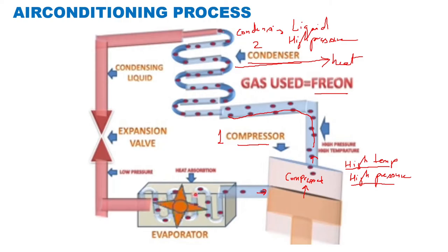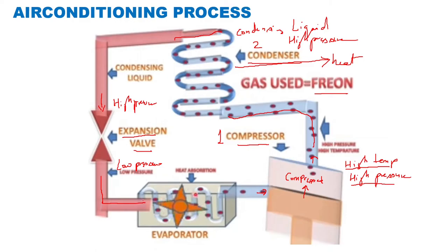The condensing liquid, which is a high pressure liquid, travels through the pipe to the expansion valve, which is also in the outdoor unit. The expansion valve does the opposite of compression — it converts the high pressure of the liquid into low pressure. This results in a cool, low-pressure refrigerant liquid that is ready to go to the evaporator.